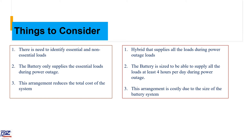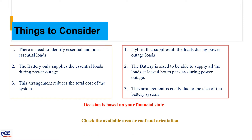This second arrangement is costly due to the size of the battery system — it requires a bigger battery. The decision is normally based on the financial side; if you are able to pay for the full battery, then you can go ahead. Then check the availability of the area or the roof and the orientation, because before you size your PV array, you need to check the available roof area to install the panels.